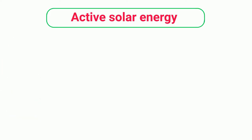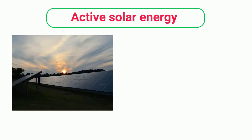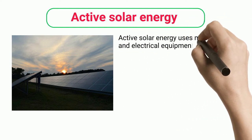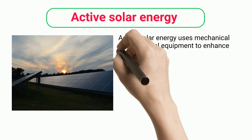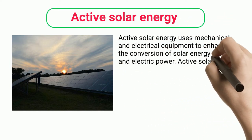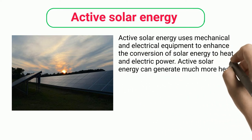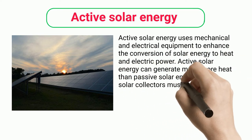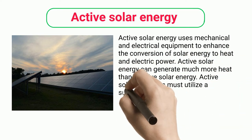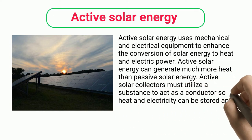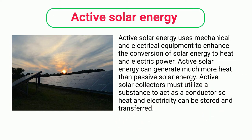Active solar energy uses mechanical and electrical equipment to enhance the conversion of solar energy to heat and electric power. Active solar energy can generate much more heat than passive solar energy. Active solar collectors must utilize a substance to act as a conductor so that heat and electricity can be stored and transferred.